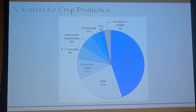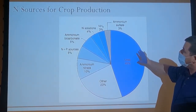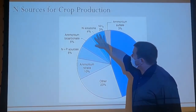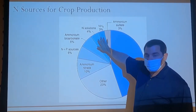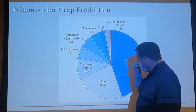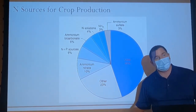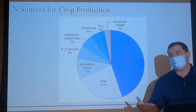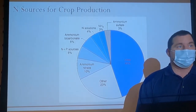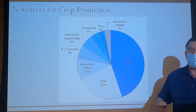Looking at some of the nitrogen sources we'll be using for crop production: some of the ones you may be most familiar with is urea. We have ammonium sulfate and some solutions that are becoming more popular. We can't get ammonium nitrate much anymore. And then we have about 23% that we'll get from poultry manure or some other manure type source or some kind of organic material.